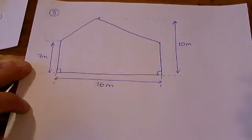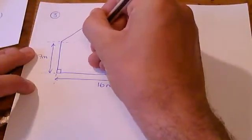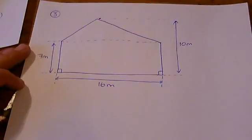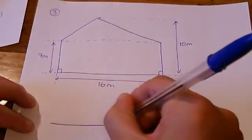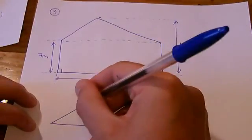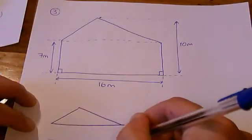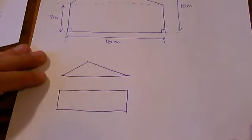So what we need to do is chop this into two or more smaller shapes, familiar shapes. I'm going to do that by putting a straight line across there. And then you can see we have a triangle and a rectangle. So I've just separated those out on the diagram below.